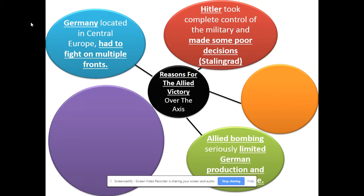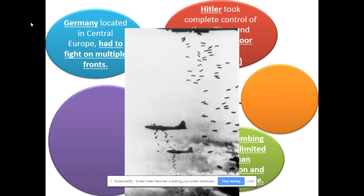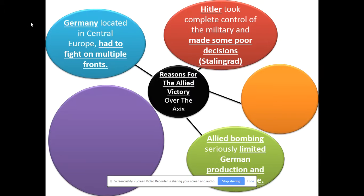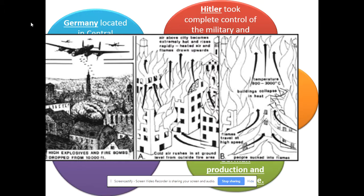Another reason is that Allied bombing is going to seriously limit German production and what we call civilian morale. We are going to bomb Germany into the Stone Age — daily bombing of cities, your major German cities are going to be leveled after the war. You're not even going to be able to recognize Germany; it's going to look like the landscape of the moon. And how can you produce tanks and weapons if your factories are on fire and burning? We do this with something called incendiary bombs — you can see the plane there dropping all of those bombs. Those aren't just bombs that explode. Incendiary bomb means fire bomb.